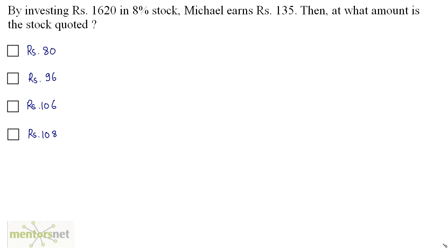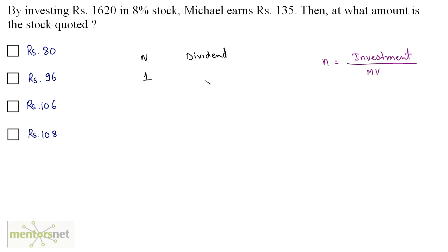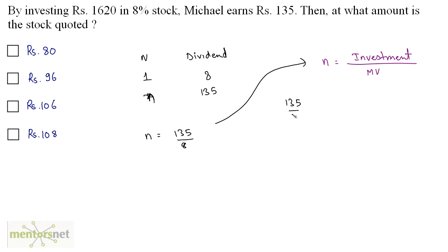It actually means the market value of one stock. You have been given the total amount invested. The formula for the total number of shares N equals the total investment divided by the market value of one stock. If you have 1 share, the dividend is Rs. 8 when the face value is 100. For a dividend of Rs. 135, N = 135/8. So, 135/8 equals 1620 divided by the market value.